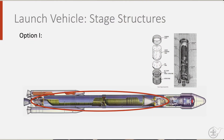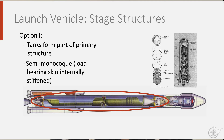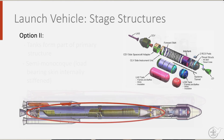There are two types of stage structures. One, where fuel tanks are part of the primary load-carrying structure, such as the Saturn V rocket. These structures resemble a semi-monocoque structure with internal stiffeners.